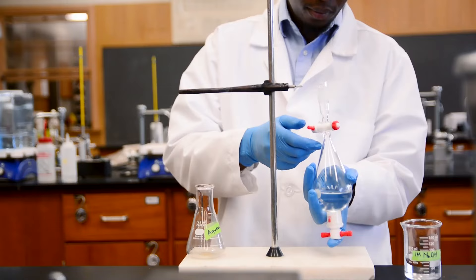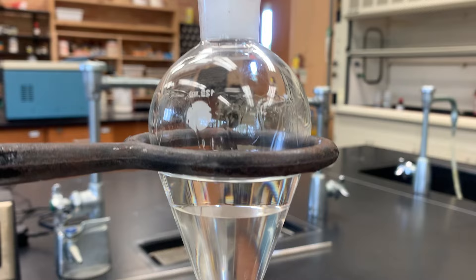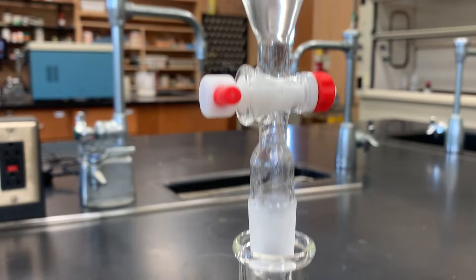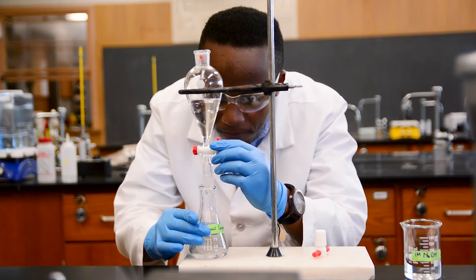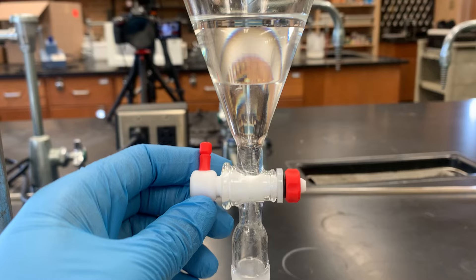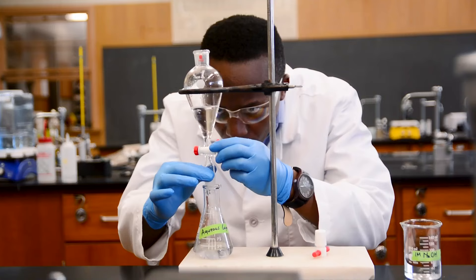After mixing, it is time to separate. Return your separatory funnel to the ring support and allow the contents to settle. You should see the two layers separate clearly. You can now open the stopcock to let the bottom layer drop into a clean flask. This is where you have to be careful. Watch the aqueous layer drip slowly so that you can stop it right before any of the top layer goes through. When the line separating the layers reaches the stopcock, close it.